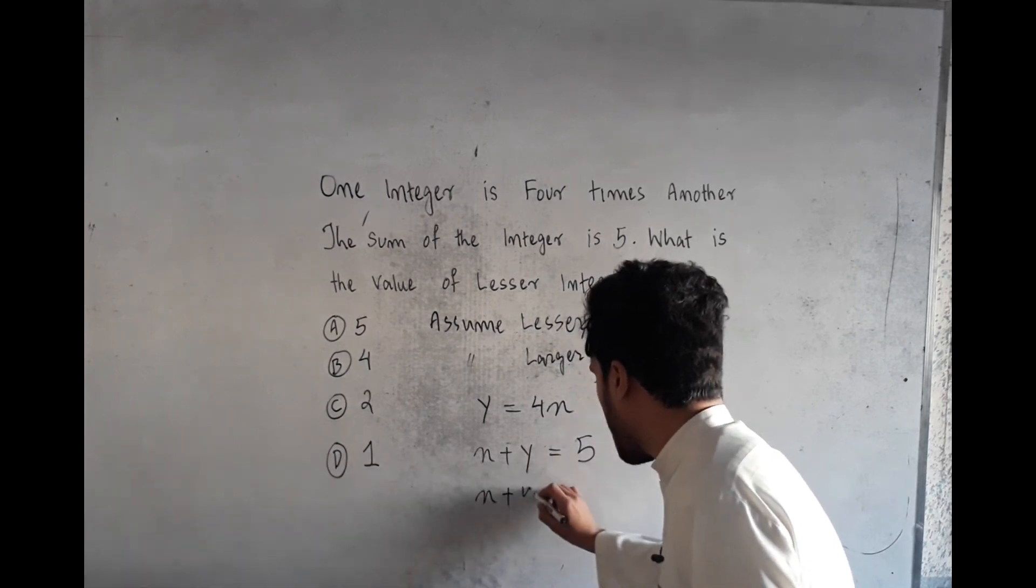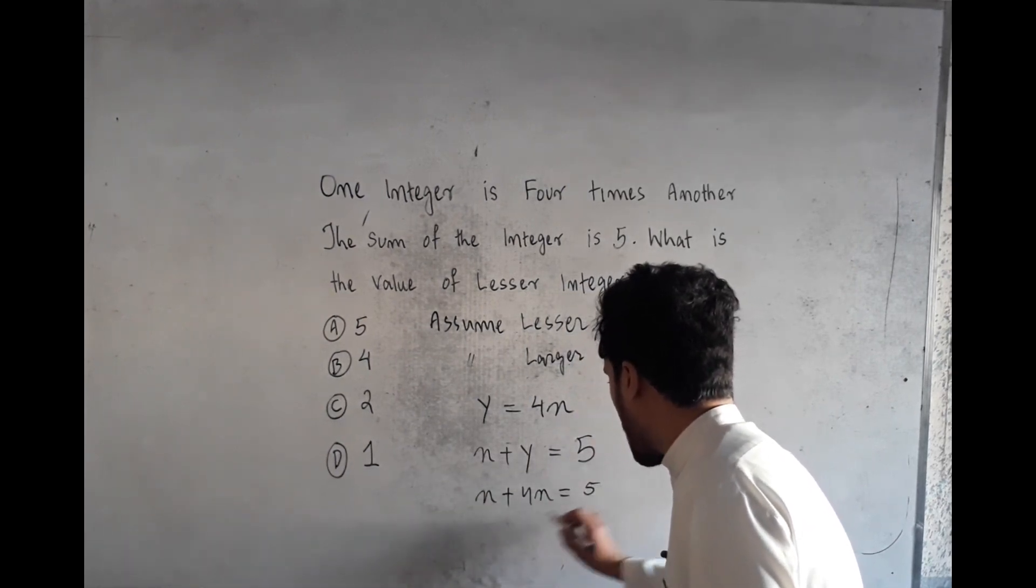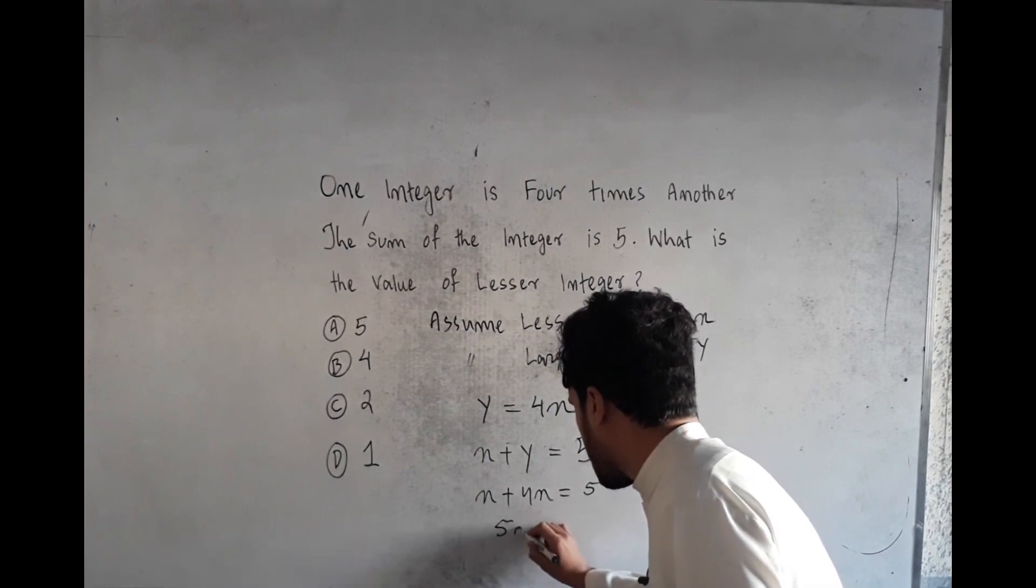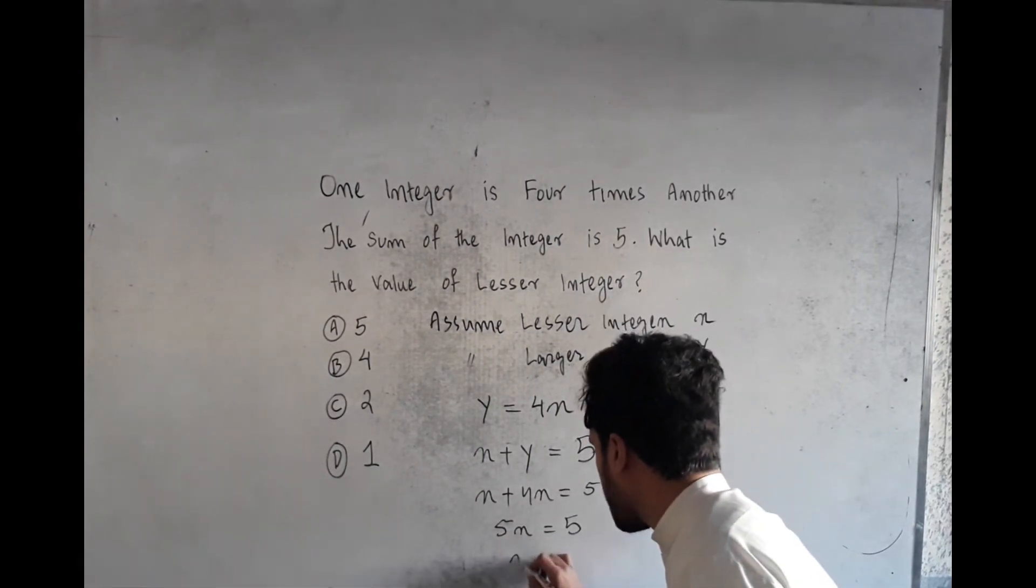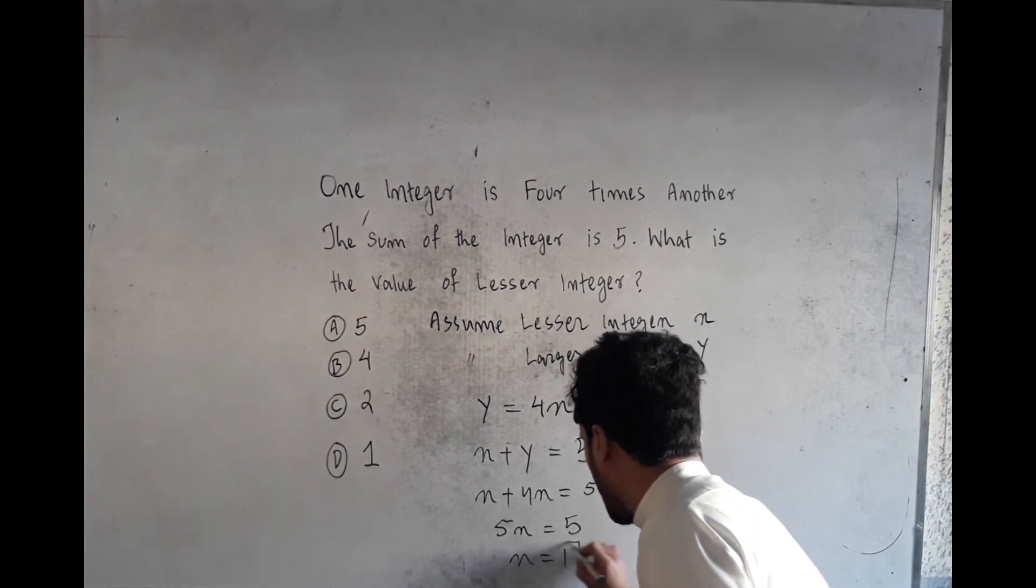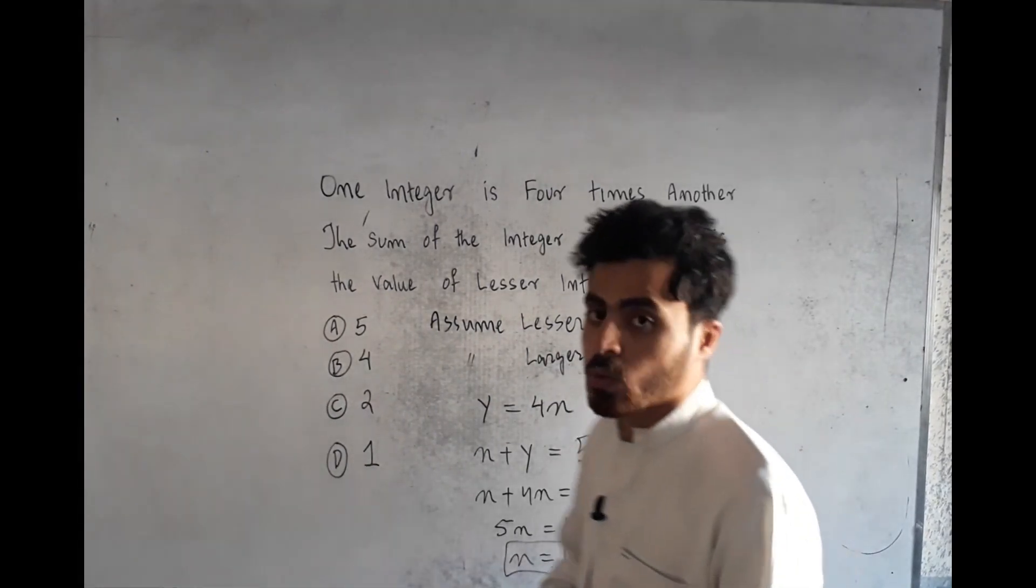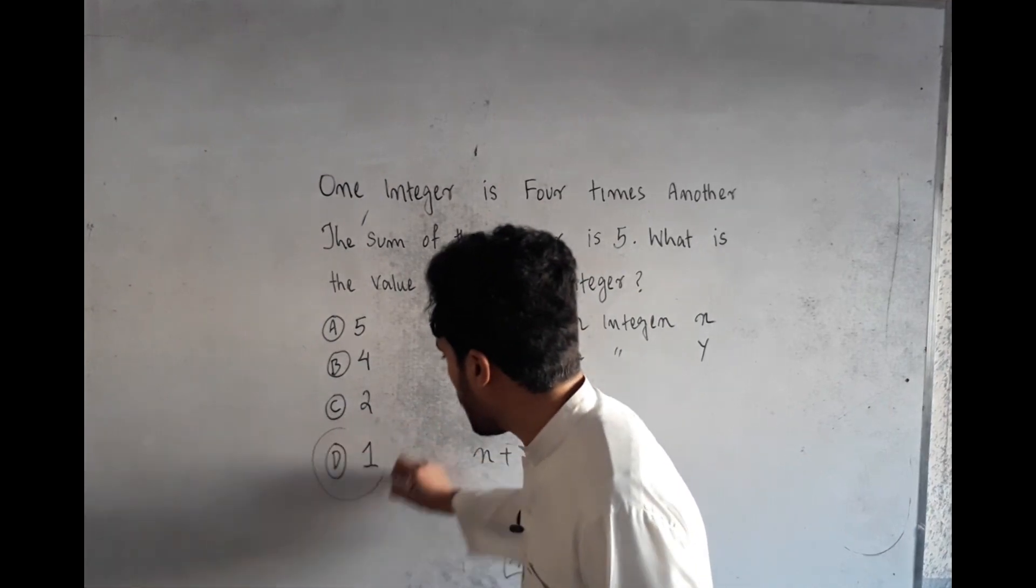4x equals 5. So 5x equals 5, therefore x equals 1. Here x equals 1, so the correct option is D.